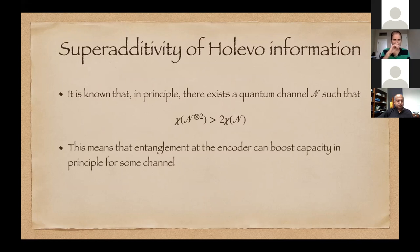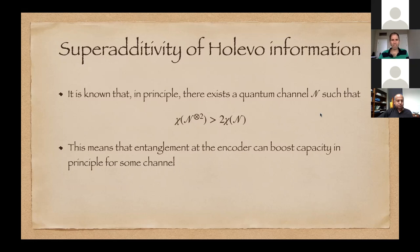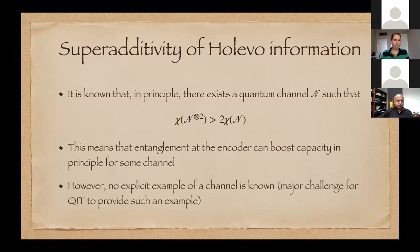This translates to a physical statement: the encoder using entangled codewords can boost the capacity in principle for some channels. This inequality was shown by Matt Hastings, building on work of Andreas Winter and Patrick Hayden in 2008. It's still open to find an explicit example of a channel for which the superadditivity holds — no explicit example is currently known.